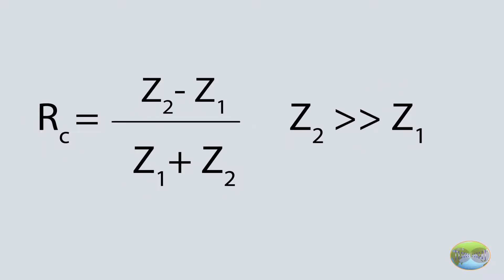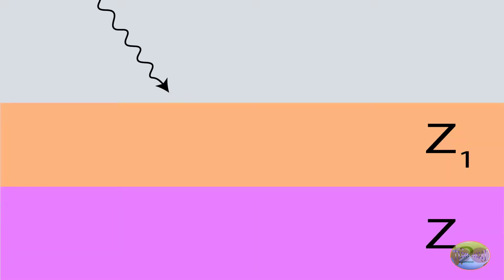This essentially means when impedance of second layer is very high, a higher fraction of wave is reflected, which is obvious, because the second layer has high impedance, it would oppose a large fraction of wave energy.